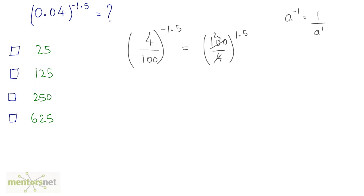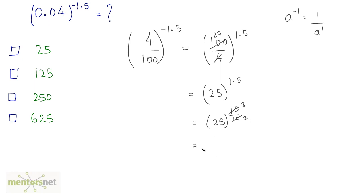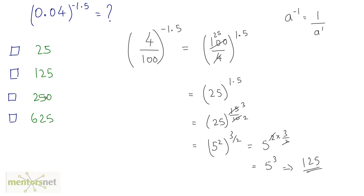Now, 4 times 25 is 100, so this becomes 25 raised to 1.5. Writing 1.5 as 15 by 10, and simplifying, 25 is 5 squared. So we have 5 squared raised to 3 by 2, which equals 5 raised to 2 times 3 by 2. The 2s cancel, leaving 5 cubed, and 5 cubed is 125. So the answer is option B.